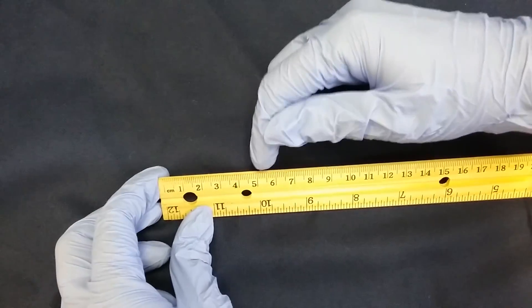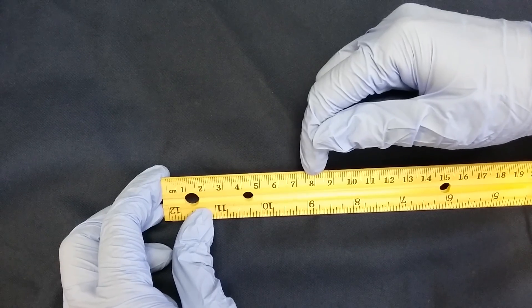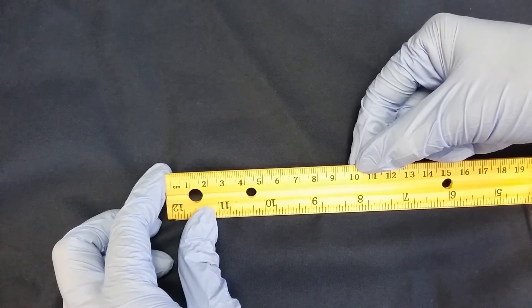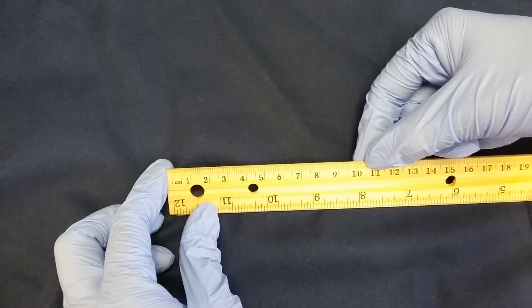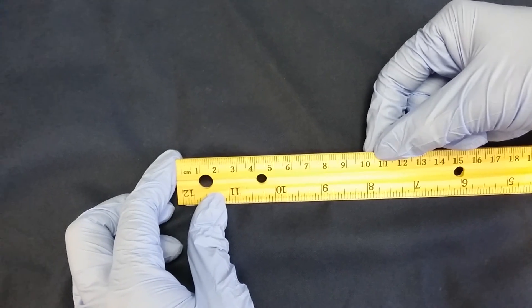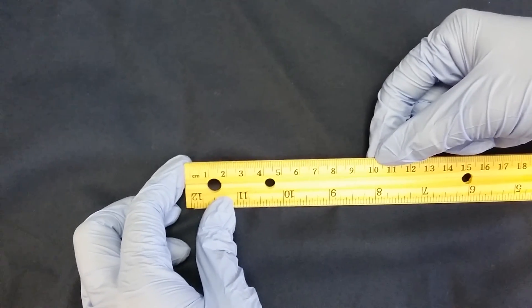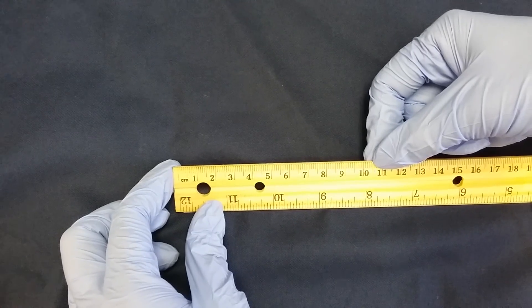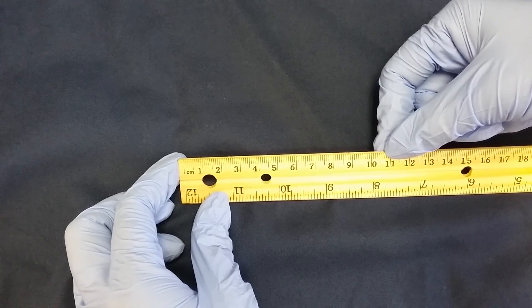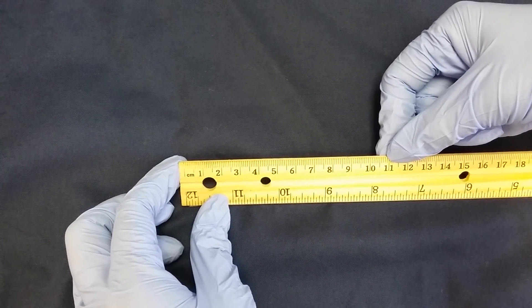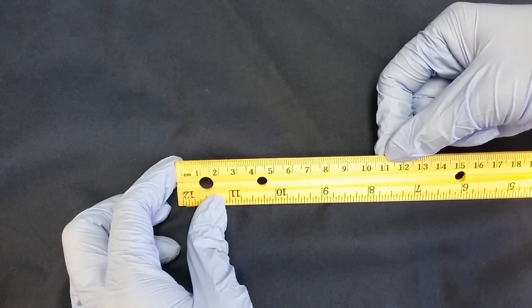Each of these numbers is a centimeter. Each of the lines in between is one millimeter or 0.1 centimeters. So right here we have 10.1 centimeters. Right here we have 10.5 centimeters, 10.6, 10.7, 10.8, 10.9, and then 11.